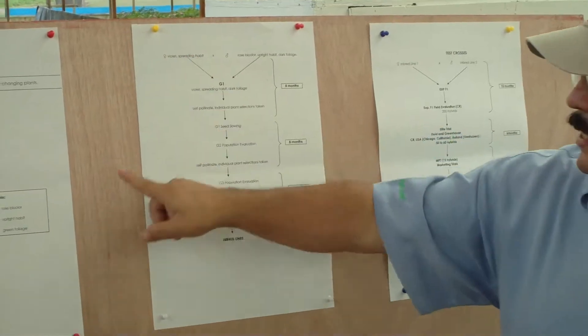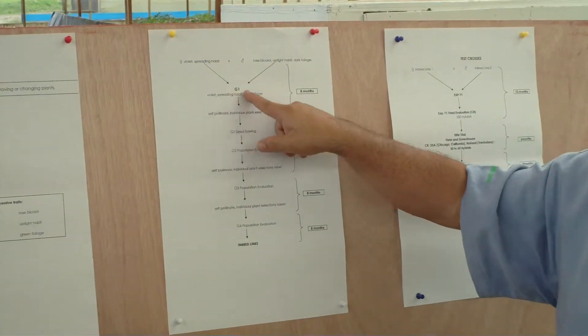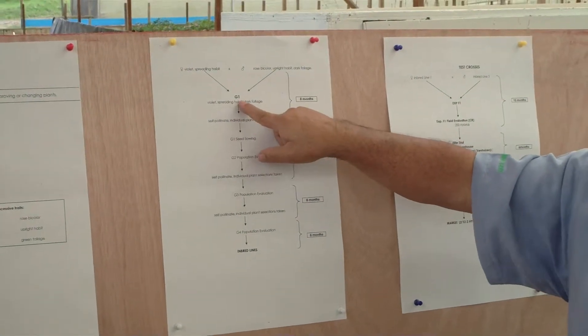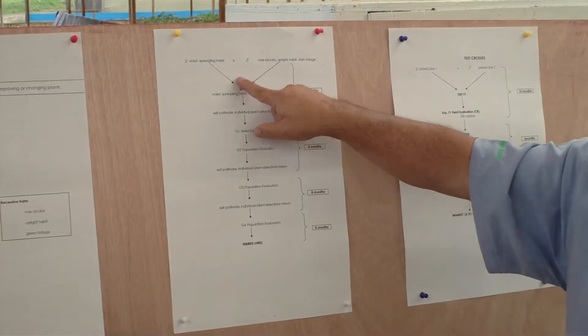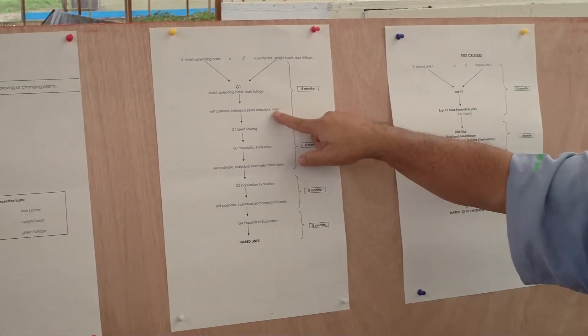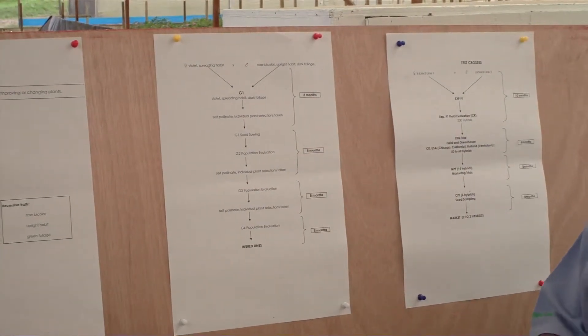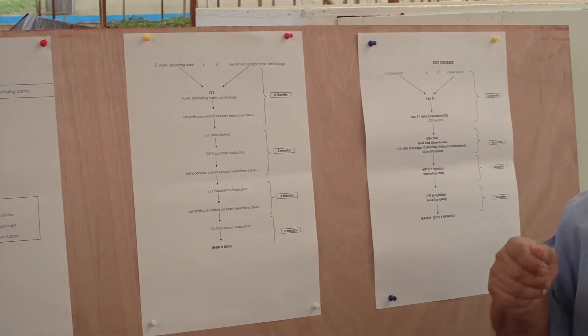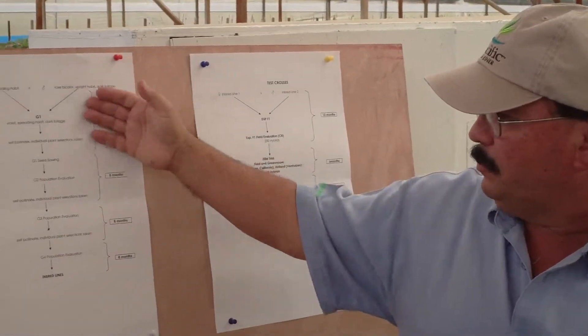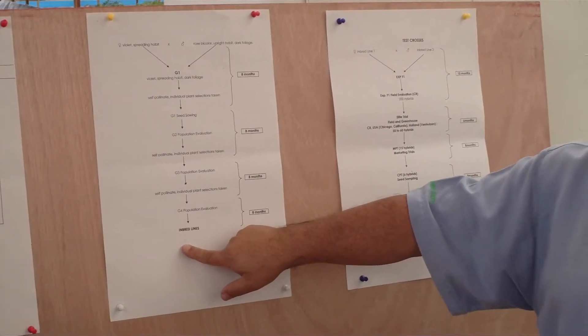When I start to make this cross, I get generation number one, which is going to give us just these traits. But once you take plants of this generation one and self-pollinate some individual plants, you are going to get a lot of variation. It's the point that the breeder has to know what to take to develop the embryo lines. In all of this process, usually in four or five generations, you get the embryo lines.